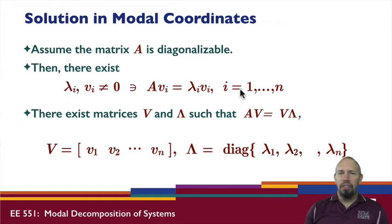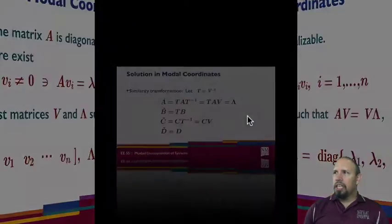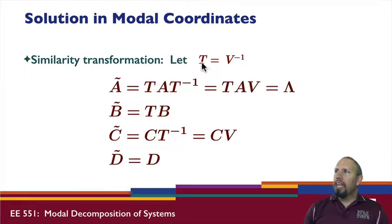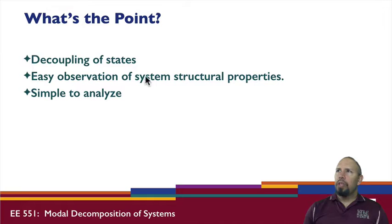Therefore, there exist matrices V and capital Lambda such that AV equals V times capital Lambda, where V is the matrix of eigenvectors and Lambda is a diagonal matrix of the eigenvalues. This is the matrix in diagonal form. Now if we let T equal V inverse, we can show that our new A matrix is in fact just Lambda. We can put the system into what is called modal form - that is when we have it in diagonal form.